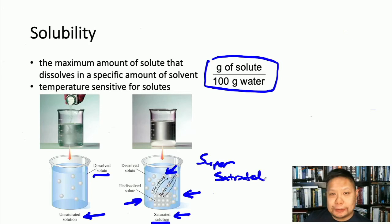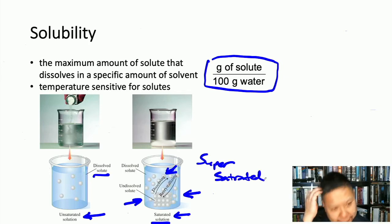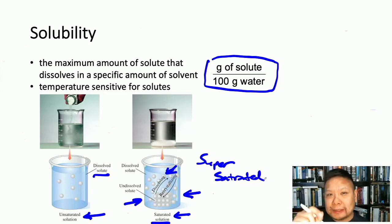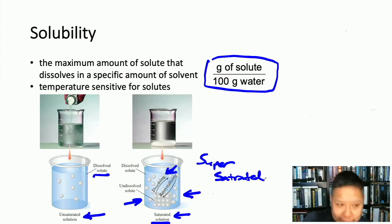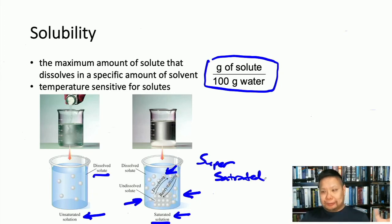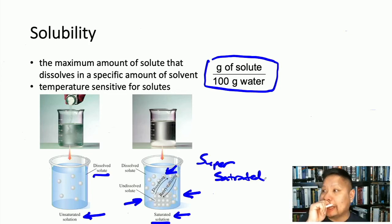If you heat water and dissolve as much solute as possible while it's hot, you create a supersaturated solution. When it cools, it remains clear, but adding any impurity (a nucleation site) causes all the excess solute to crystallize at once — the supersaturated salt precipitates out of solution. It's a fascinating phenomenon.